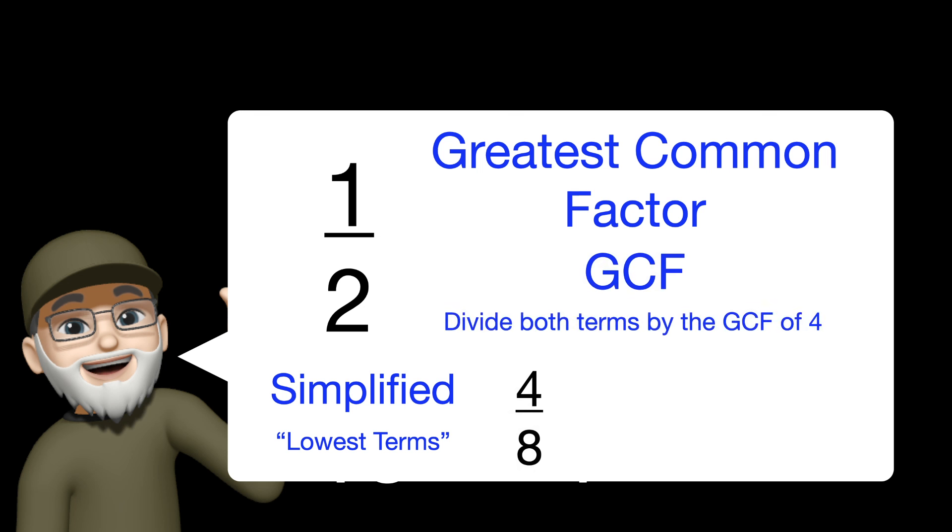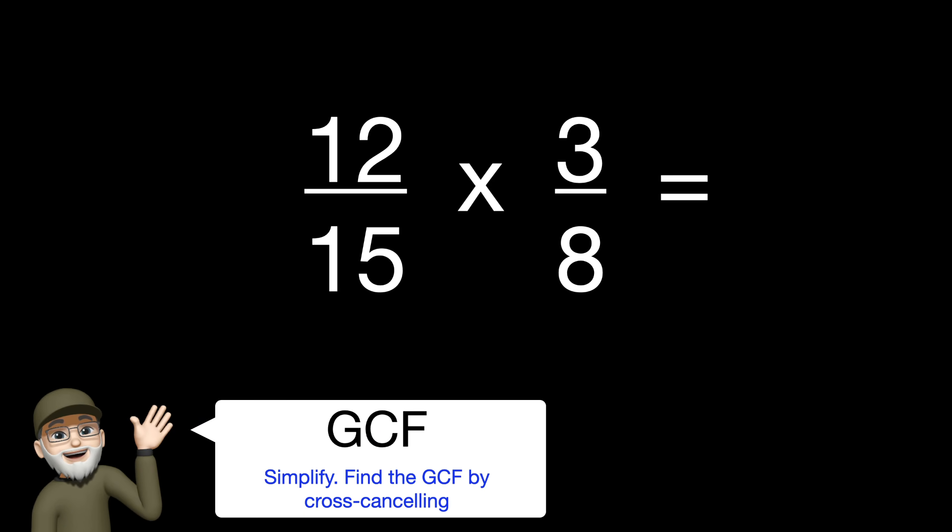And for example, with 4 eighths, we would divide both terms by the greatest common factor of 4 to get the one half.